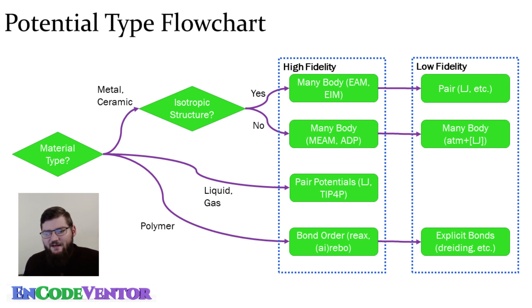So if yes, for a high fidelity simulation, you still want to use a many body potential, but there are some potentials that don't take into account the angular dependence of the atoms around it, that are still many body, like EAM and EIM. And so those are a good place to start for high fidelity simulations.